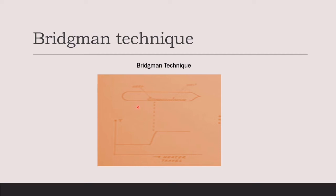Instead of moving the heater, we could just move the quartz ampoule. This is our quartz ampoule, and if we move the quartz ampoule in this direction instead of moving the heater, even in that case the seed end of the melt will come into the low temperature zone and therefore it will get solidified when it enters the lower temperature zone. Thus, we will get a single crystal.